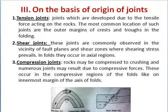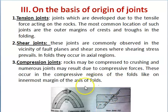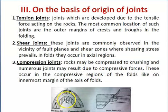On the basis of origin, joints are classified into tension joints, shear joints, and compression joints. Tension joints are developed due to tensile forces, and the most common locations are the outer margins of crests and troughs in folding. Shear joints are commonly observed in the vicinity of fault planes where shearing stress prevails. Compressional joints are developed due to compressive forces and mostly occur in the compressive region of folds, such as on the innermost margin of the fold axis.